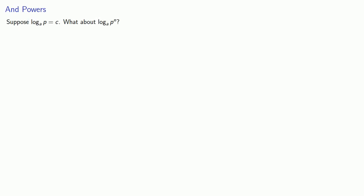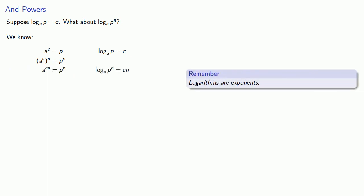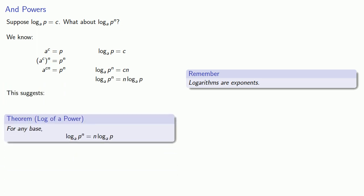How about powers? Suppose log base a of p is c. What about log base a of p to the n? Using the definition, if log base a of p is c, we rewrite in exponential form. We find p to the n, apply our rules of exponents, then hit both sides with a log. Since c is the same as log base a of p, this gives us a result: for any base, log base a of p to the n equals n times the log base a of p. The power comes out front.